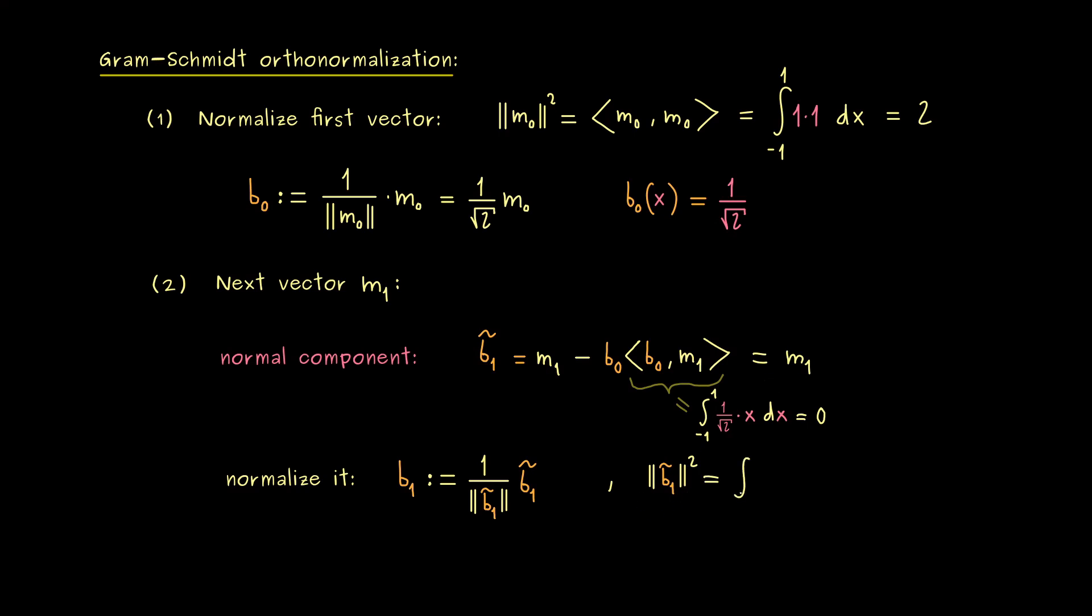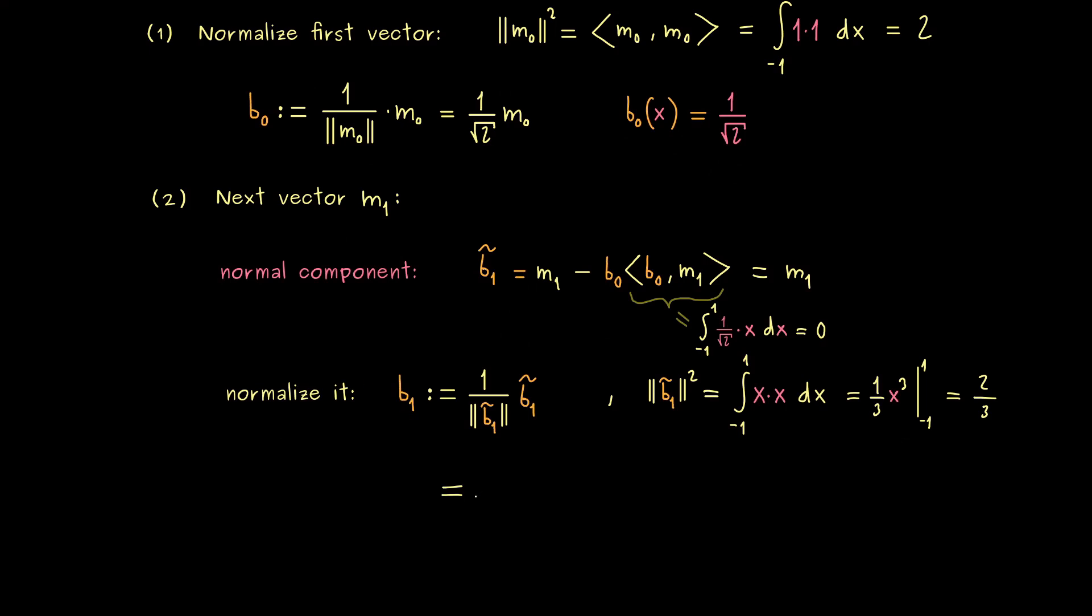But still, never forget, the normalization still has to happen. So we still have to calculate the norm of b1 tilde, which is simply m1. It's just the integral from minus 1 to 1 of x times x. Again, for the calculation, we square the norm to avoid a square root here. We conclude that the antiderivative of x squared is 1 over 3 x cubed. Then put in the limits and what we get out is 2 over 3. Hence, we can simply write down b1. It's the square root of 3 halves times m1. Therefore, if we want to write it as a function, we have the square root times x.